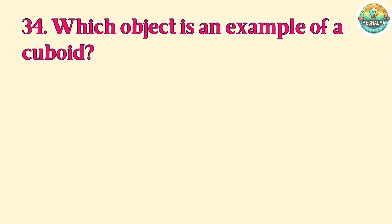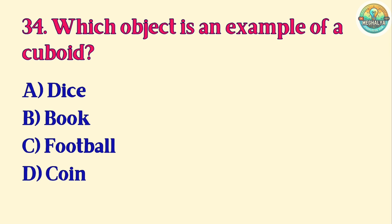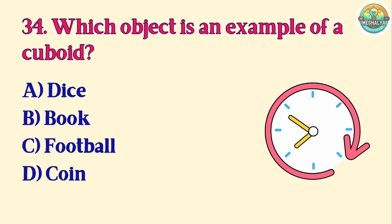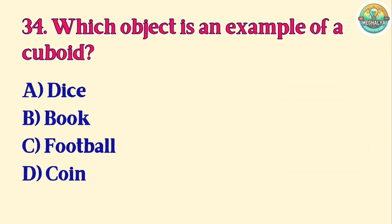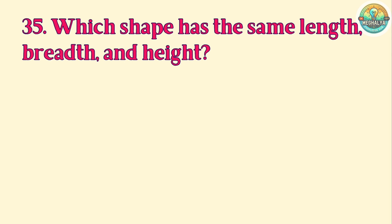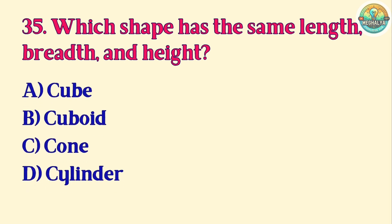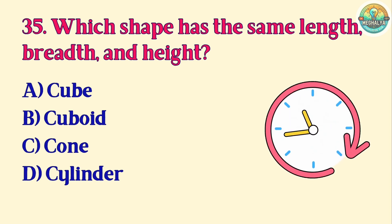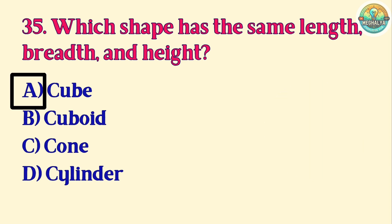Question 34. Which object is an example of a cuboid? A. Dice. B. Book. C. Football. D. Coin. Correct answer is D. Coin. Question 35. Which shape has the same length, breadth, and height? A. Cube. B. Cuboid. C. Cone. D. Cylinder. Correct answer is A. Cube.